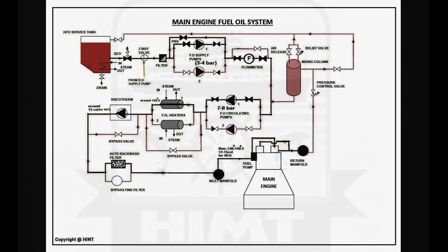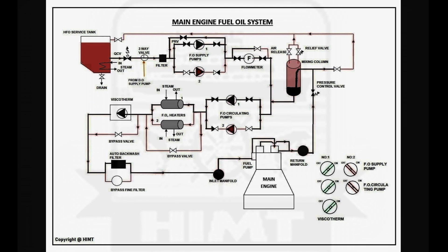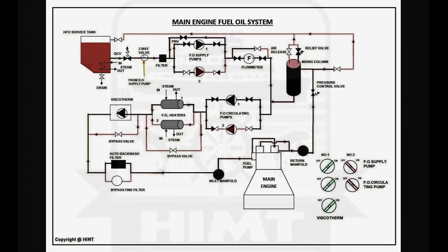The excess fuel is returned to the return manifold and it flows into the mixing column, which acts as a buffer tank for the excess fuel and it is recirculated in the system. If there is any pressure rise in the system, it will be released by the relief valve into the fuel oil service tank. The air trapped in the system is released into the service tank by an automatic air release valve fitted on the mixing column.